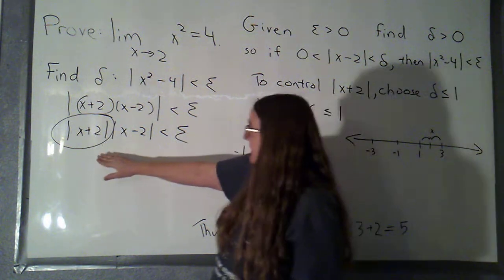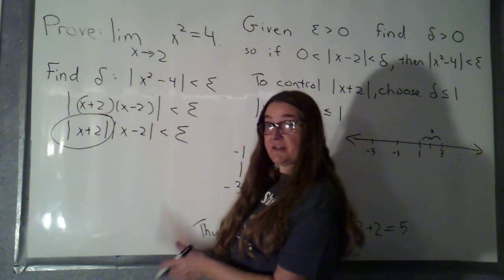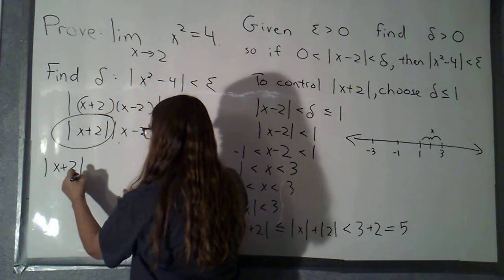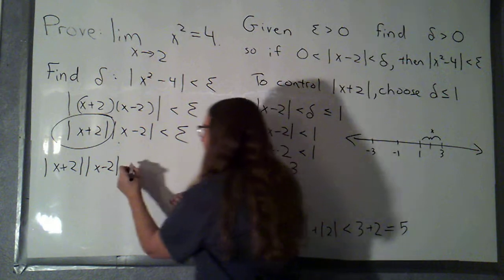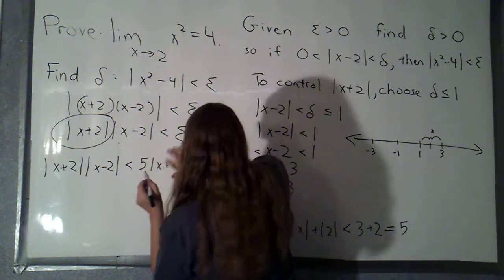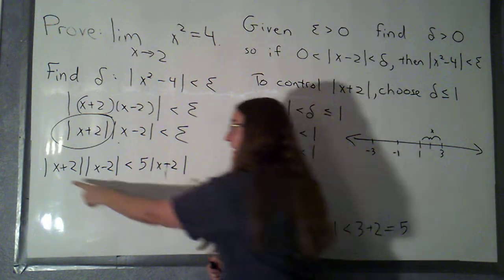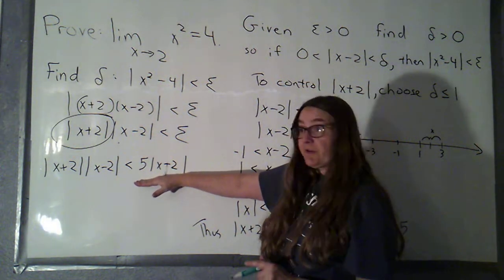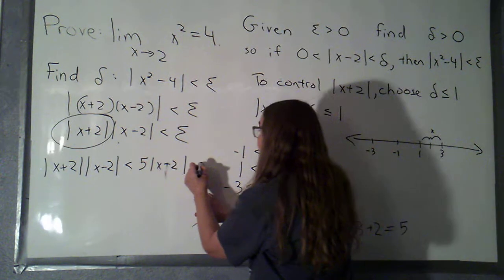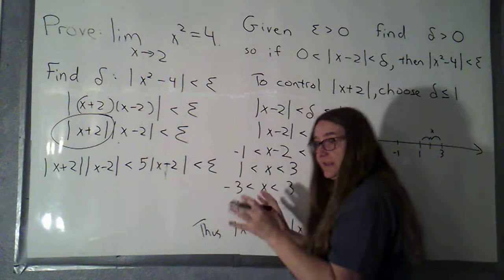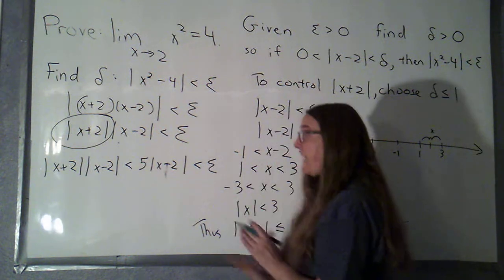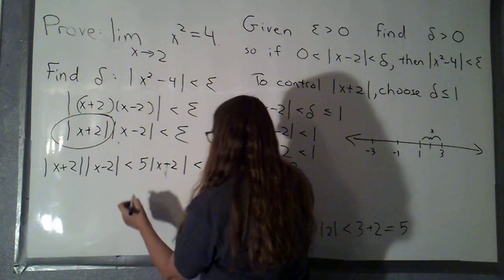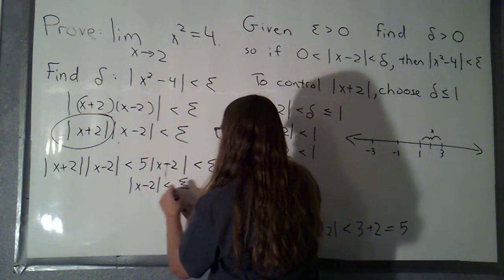Now I'm going to come back to the work I was doing with the entire quantity, the absolute value of x squared minus 4. I've said that's going to be the absolute value of x plus 2 times the absolute value of x minus 2, and that's going to be less than 5 times the absolute value of x minus 2. This starts to look more like what I saw when I was working with a linear function. Now, if I can make this less than epsilon — my new goal — that's going to imply that the original expression is also less than epsilon. I just need to make sure that the absolute value of x minus 2 is less than epsilon over 5.